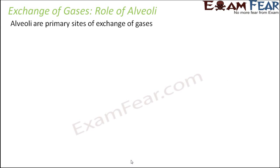Alveoli are the primary sites of exchange of gases. We will look at each of the factors and how each plays a role in the actual exchange of gases. The first factor is the partial pressure gradient — whether carbon dioxide and oxygen move from a region of higher partial pressure towards a region of lower partial pressure.